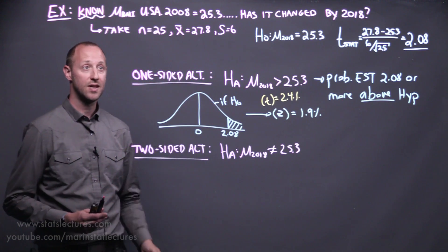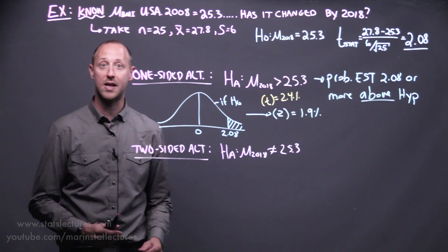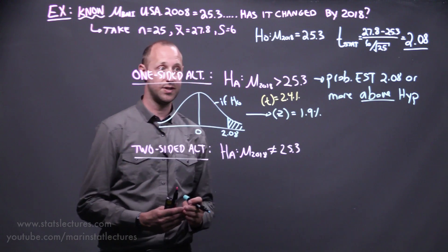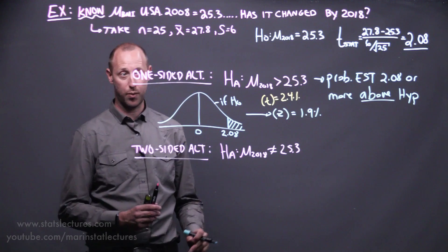So again, this tells us if our null hypothesis is true, if the mean hasn't changed, the probability of getting an estimate of 2.08 standard errors above or more is about 1.9%.